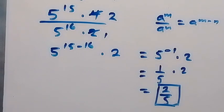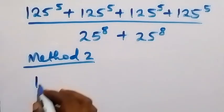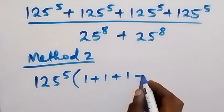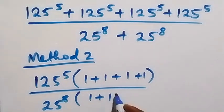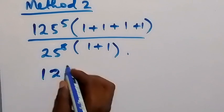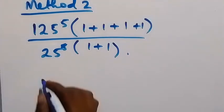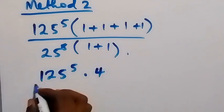Now let's look at Method 2. From here we can factor 125 raised to power 5 out directly, giving us 1 plus 1 plus 1 plus 1 in the numerator. From here we have 25 raised to power 8 times bracket 1 plus 1 in the denominator. This becomes 125 raised to power 5 times 4, divided by 25 raised to power 8 times 2.